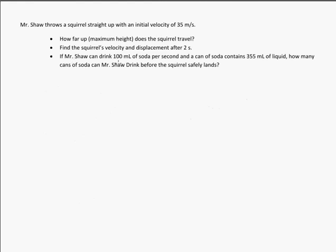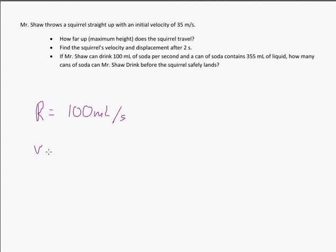Now, if Mr. Shaw can drink 100 milliliters of soda per second and a can contains 355 milliliters of liquid, how many cans of soda can Mr. Shaw drink before the squirrel lands? Mr. Shaw has a rate of 100 milliliters per second. We're trying to figure out the volume and how many cans. The volume of one can equals 355 milliliters.